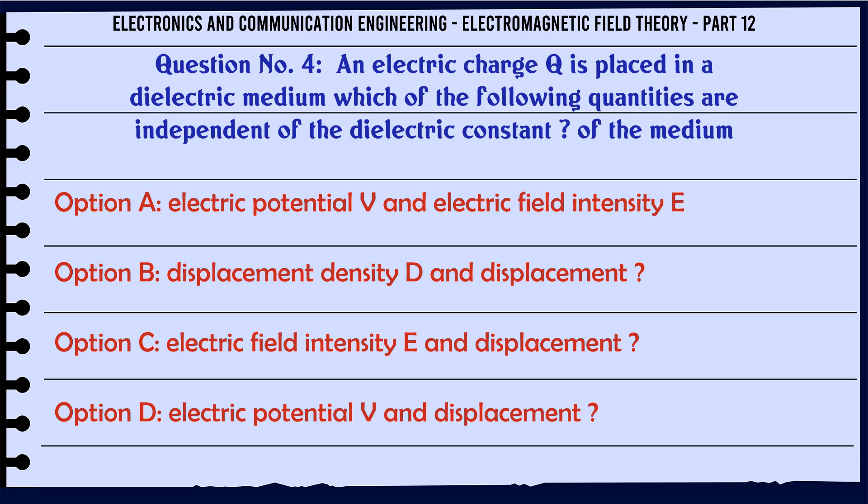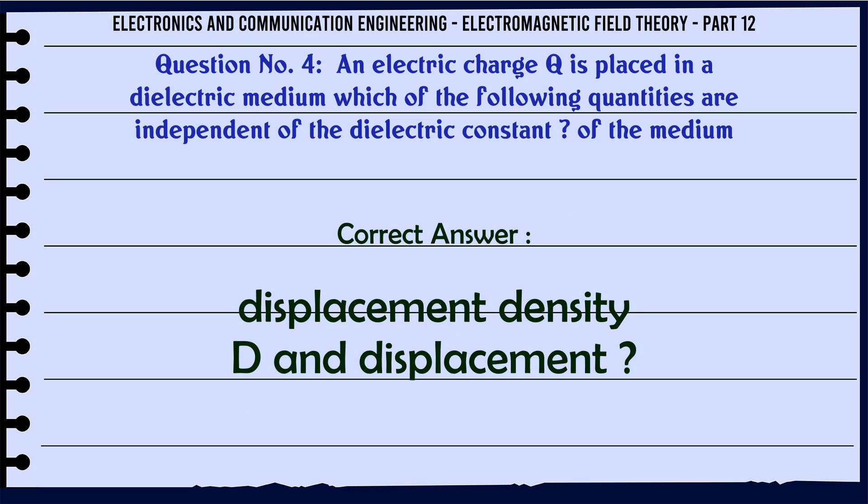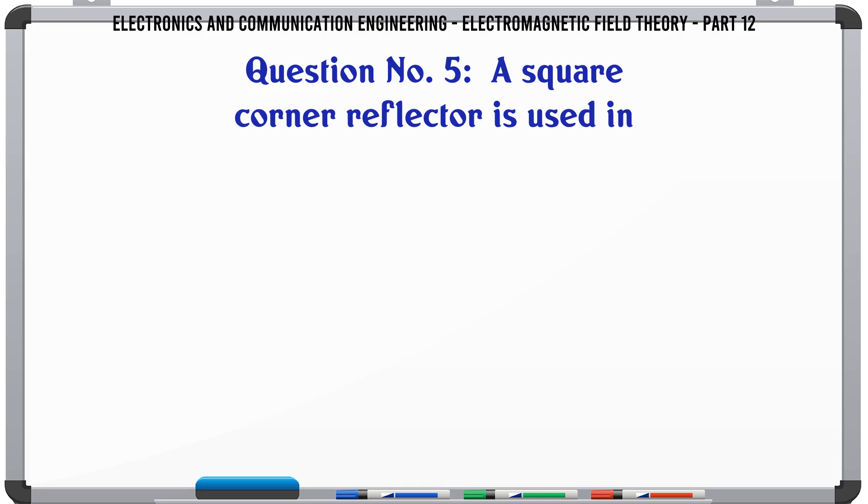The correct answer is 400 km. An electric charge Q is placed in a dielectric medium. Which of the following quantities are independent of the dielectric constant of the medium? A. Electric potential V and electric field intensity E, B. Displacement density D and displacement.